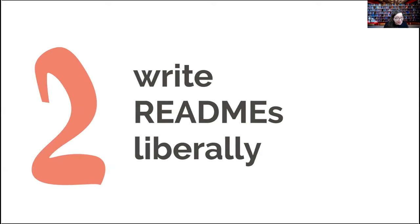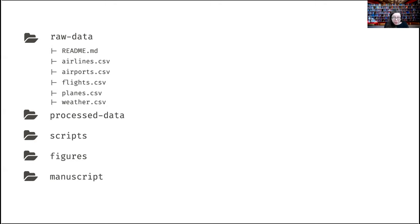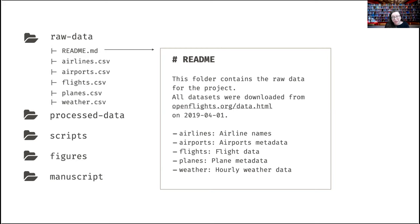Principle two: write READMEs liberally. For example, in your raw data folder, put a README with information on data provenance and what every single data file contains. This will stop you and others from double-clicking those files to open them, because remember — we don't want to be touching our raw data. Ideally you're not opening raw data files in Excel, which might actually change some data types even if you never intended to do your analysis there.